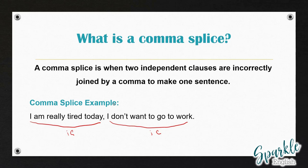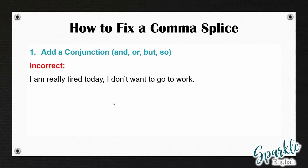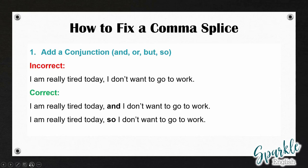So what can we do to fix this comma splice? There are three different ways. The first one is to add a conjunction, such as and, but, or so. 'I am really tired today, I don't want to go to work' is incorrect as a comma splice. To correct it, we can add a conjunction. For example: 'I am really tired today, and I don't want to go to work.' We could also say: 'I am really tired today, so I don't want to go to work.'